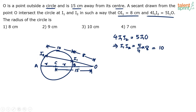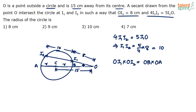There is one very important theorem for circles from an external point with two secants: OI1 × OI2 = OB × OA. From point O, OI1 and OI2 are the points where one secant intersects the circle, and OB and OA are where the other secant (through the diameter) intersects the circle.